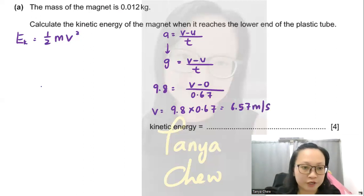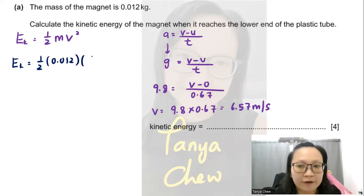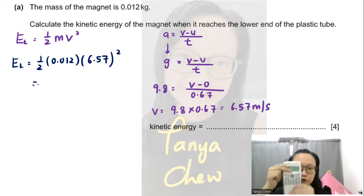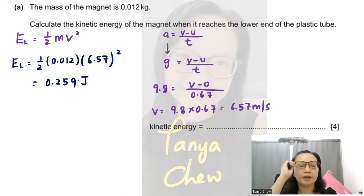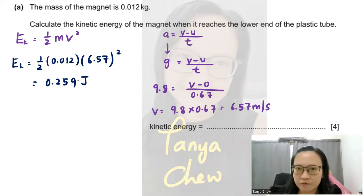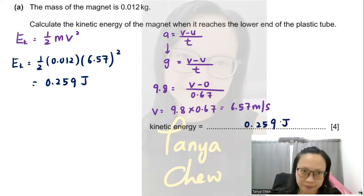Now that I have all the information needed, I substitute into the kinetic energy equation: Ek equals half times 0.012 kilograms times 6.57 squared. The result is 0.259 joules. You can express the final answer to two or three significant figures, so either 0.26 joules or 0.259 joules. That gives you the marks for part A.